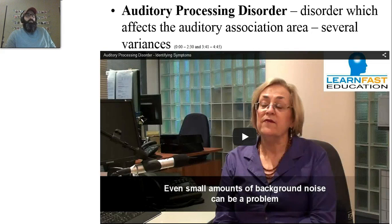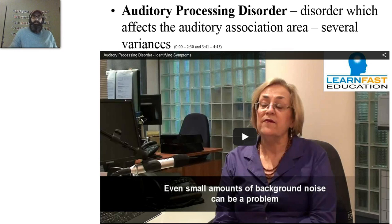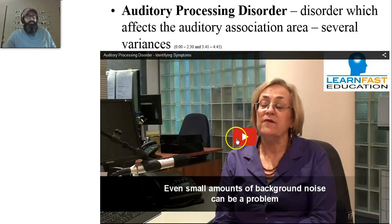One of the big things to understand is that the brain is a very complex structure. Even though it isn't super large, it's so specialized into regions that there are all kinds of different disorders that can result from damage to either the neural pathway leading to a cortex or to the actual cortex itself. One example is auditory processing disorder, which affects the auditory association area and has several different variances. I have a video here — I'm going to play a couple of segments that give you an indication of what auditory processing disorder is.